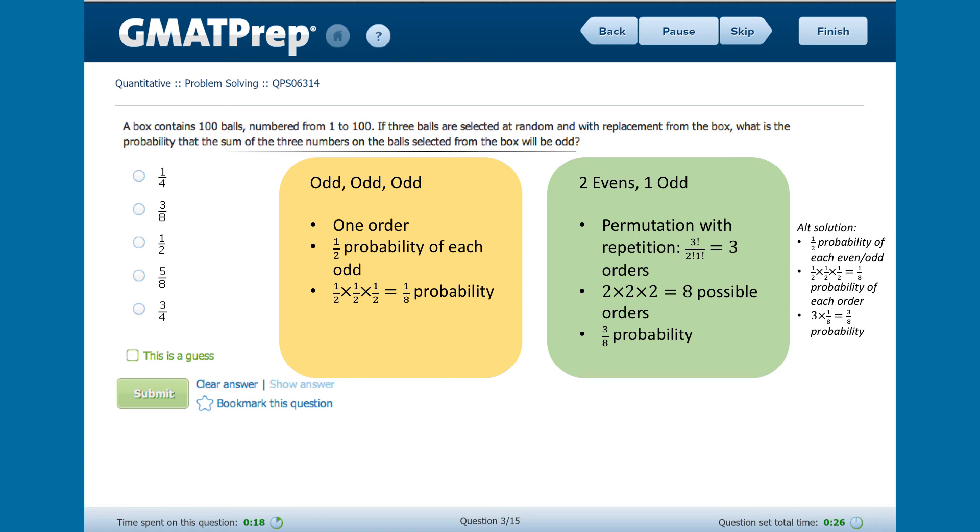All right, let's bring our all odd probability and our two evens one odd probability together. Now if the probability of all odd is one out of eight and the probability of two evens one odd is three out of eight, the total probability that the sum will be odd is one out of eight plus three out of eight equals one out of two. Now this gives us an answer of C.